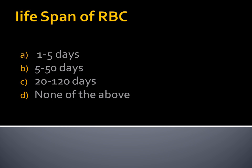Lifespan of RBCs. Option A, 1 to 5 days. Option B, 5 to 50 days. Option C, 20 to 120 days. Option D, None of the above. I explained the lifespan of RBCs and WBCs in the first part of the Blood series — go watch that if you don't know the answer. The lifespan of RBC is Option C, 20 to 120 days.